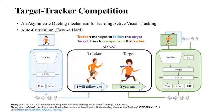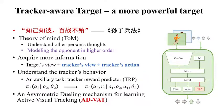For the tracker, the input is its view, passing through a convolutional neural network followed by an LSTM to fuse historical frames, then an actor-critic module evaluates and outputs its action. For the target, the input includes not only its own view but also the tracker's view and the tracker's action — giving the target more information and making it smarter, serving as the engine to drive the two-party learning. This is why we call it asymmetric dueling.